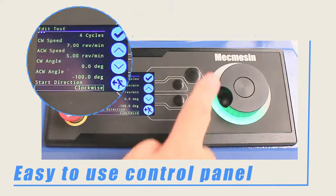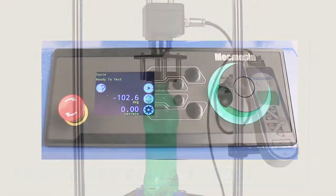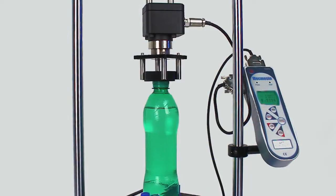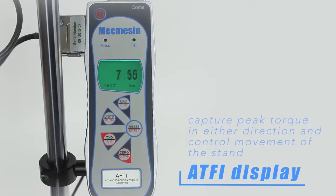There is also the provision to perform cyclic tests. The AFTI display can capture peak torque in either direction and can also control the movement of the stand, halting the test at a predefined value or if the sample breaks.